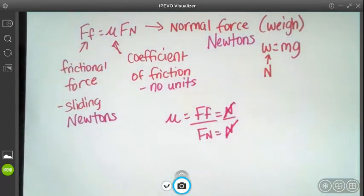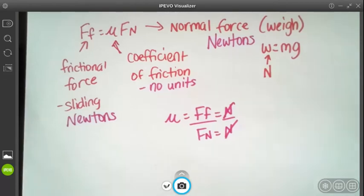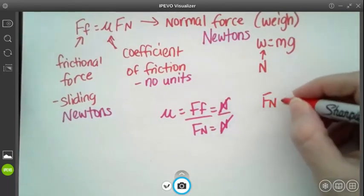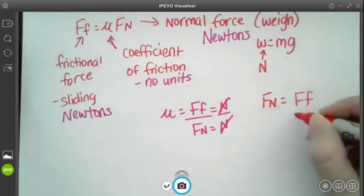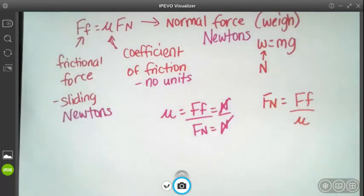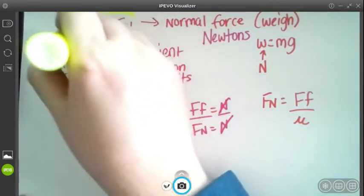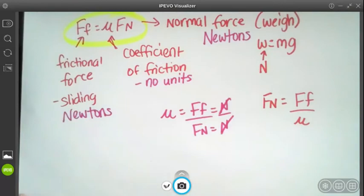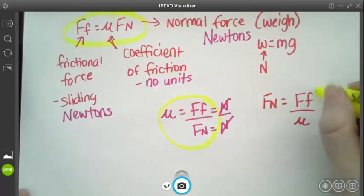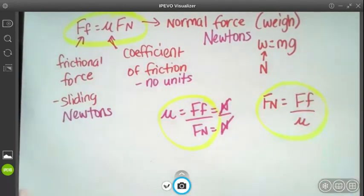If I want to solve for normal force then that would be my frictional force divided by my mu. So these are the three equations that we will use. You want to solve for frictional force, Ff equals mu Fn. You want to solve for our coefficient of friction, that is our frictional force divided by our normal force. And if we have to solve for our normal force it's frictional force divided by our mu.